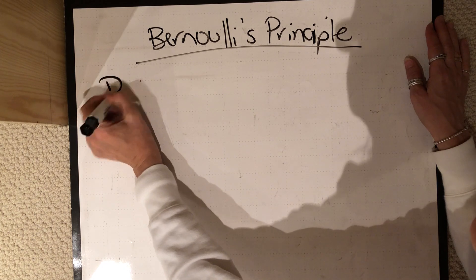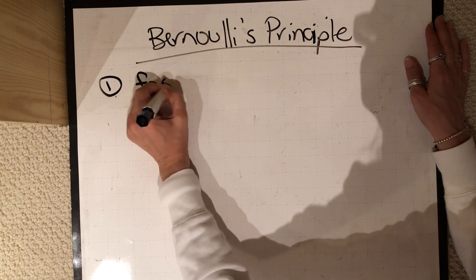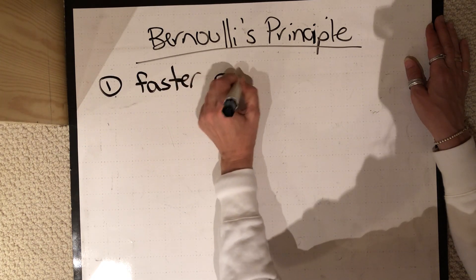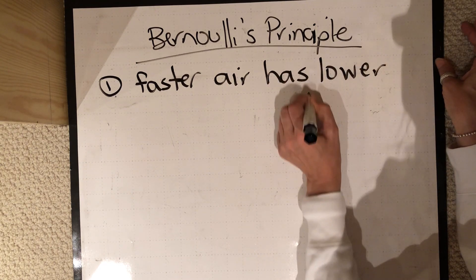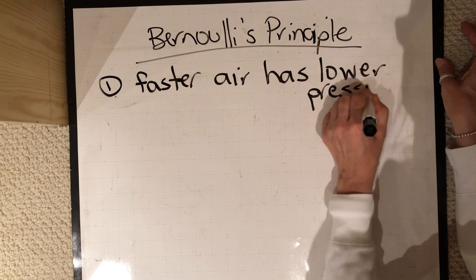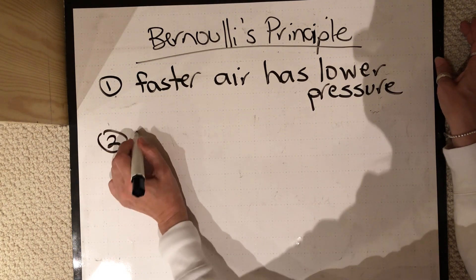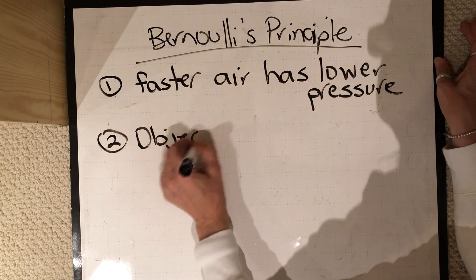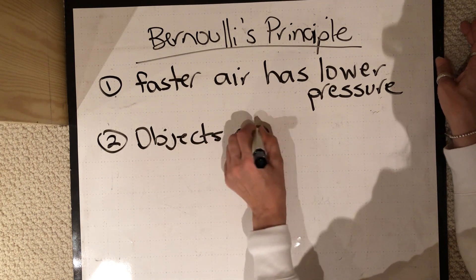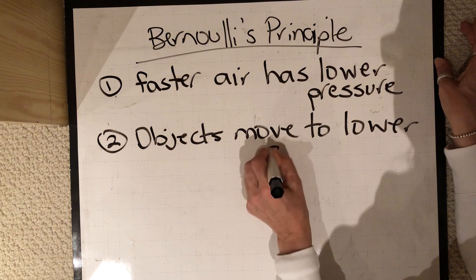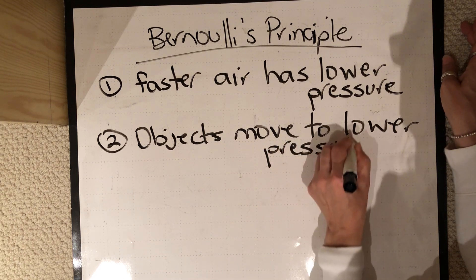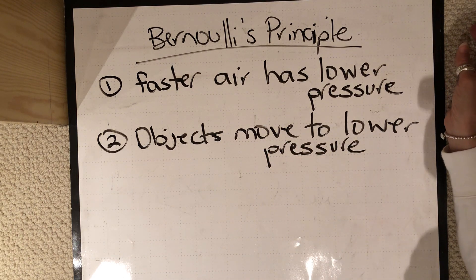So first of all, he found that faster air has lower pressure, and he also found that objects like to move to lower pressure areas. So those are basically the two things that make up Bernoulli's principle.